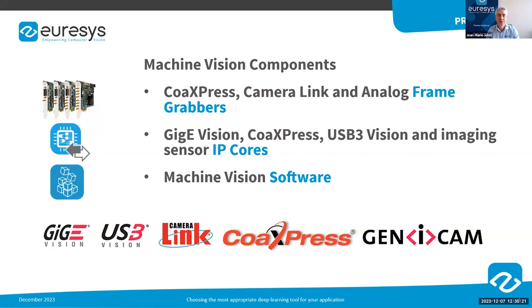Uresys offers three types of products. We are of course very well known for our frame grabbers, which have been used in the vision industry for more than 30 years. In addition to frame grabbers, we also develop and produce IP cores for various interface standards and imaging sensors. We also provide a complete range of machine vision software libraries known as Open eVision — those libraries are dedicated to the development of 2D, 3D, and deep learning-based applications.